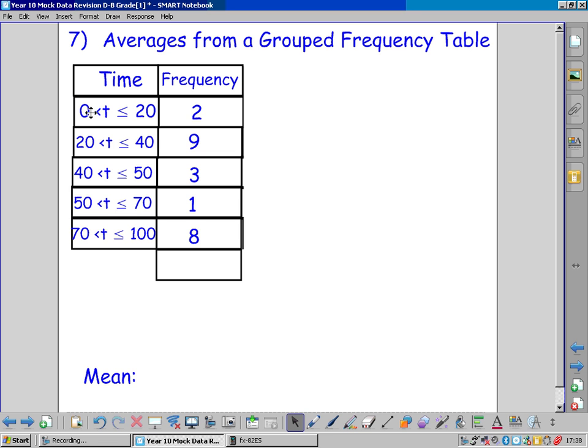And so what number, what time should we use to estimate between 10 and 20? We use the midpoints, the middle times. So we need an extra column with midpoints.